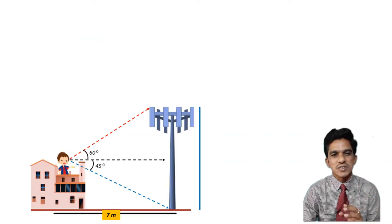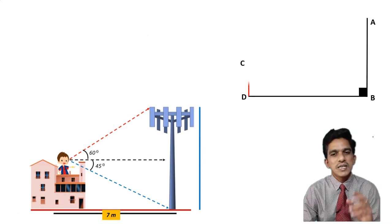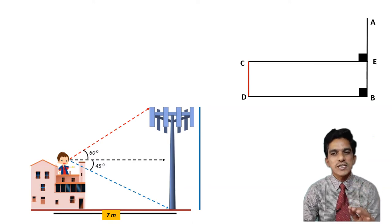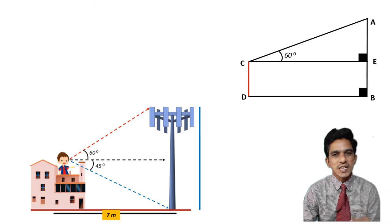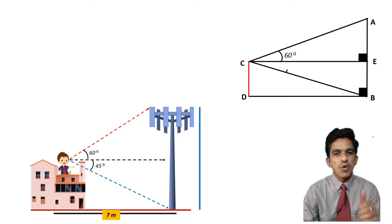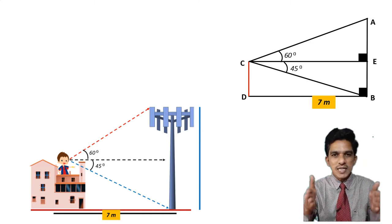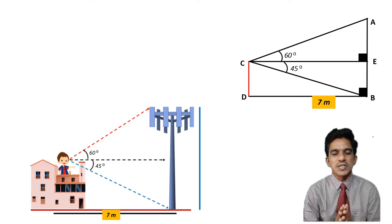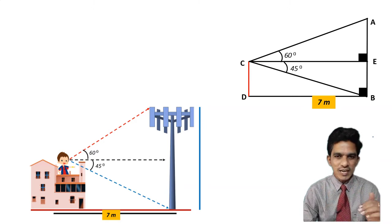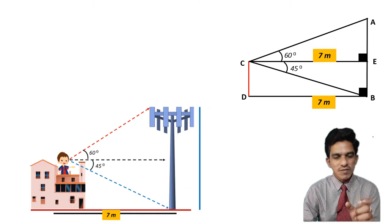Let us draw the diagram. This is the level ground. AB is the cell phone tower, CD is the building, and C is the observation point. A is the top of the cell phone tower — the angle of elevation from C to A is 60 degrees. B is the foot of the tower — the angle of depression from C to B is 45 degrees. The distance between the building and the cell phone tower is 7 meters.